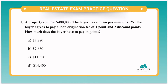Question number one. A property sold for $480,000. The buyer has a down payment of 20%. The buyer agrees to pay a loan origination fee of one point and two discount points. How much does the buyer have to pay in points?